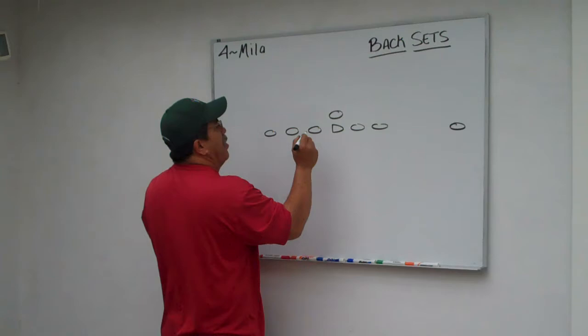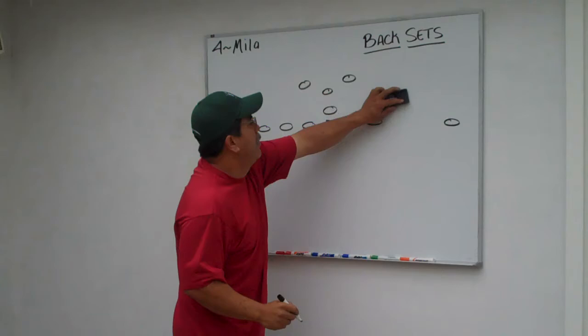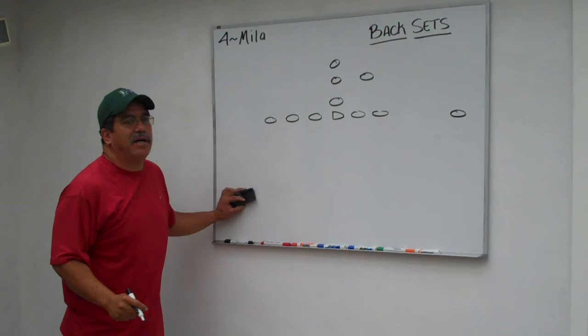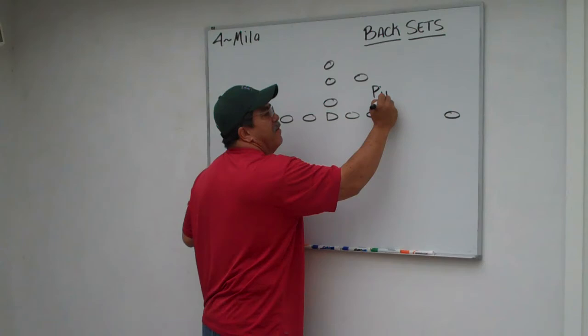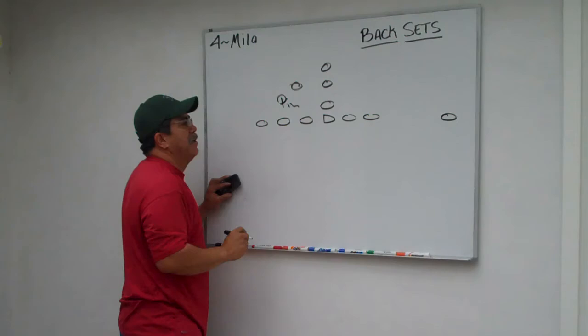If they want to bring in three backs and put them right here, we call that a wishbone set. If they want to give us that power eye look, all we say is power eye far. It's a piff set. Or it's a pin when he's right in there.